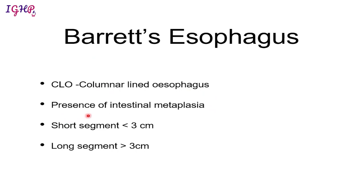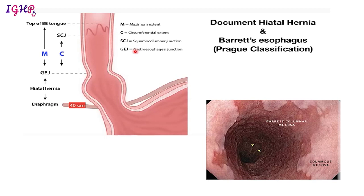The second prerequisite for Barrett's esophagus is the presence of intestinal metaplasia. Depending on the length of esophagus involved by Barrett's, we call it short segment or long segment Barrett's esophagus. If it is less than three centimeters, we call it short segment; more than three centimeters is a long segment Barrett's esophagus.